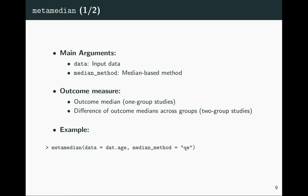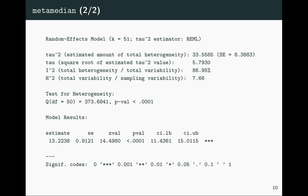The meta_median function has a similar user interface, with an input dataset and median method argument specifying the median-based method. Again, the structure of the input dataset determines the outcome measure. In the example using the age dataset with the QE median-based method, the output gives a pooled estimate of 13.2 years — the median age is 13.2 years larger in the non-survivor group compared to the survivor group.